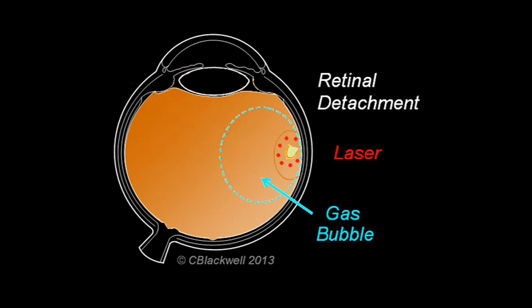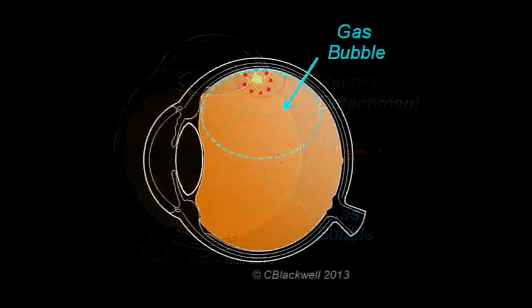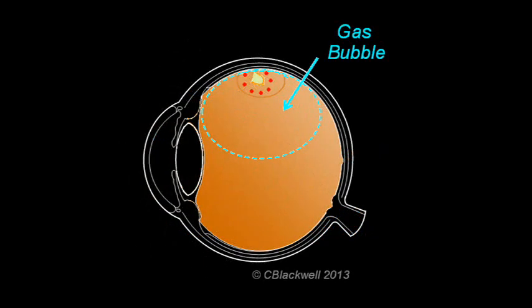Then, spots of laser energy or cryo are added to create the necessary spot welds. If you think about it, the bubble in this illustration is defying gravity. It wants to float to the top of the eye. To keep the bubble in the right spot, over the tear, means keeping the head in a particular position, which may be a bit inconvenient.